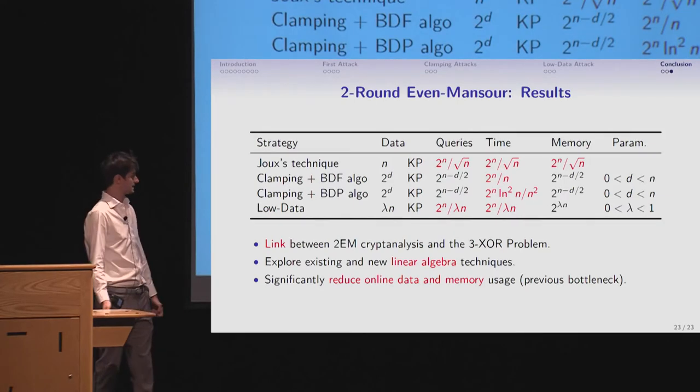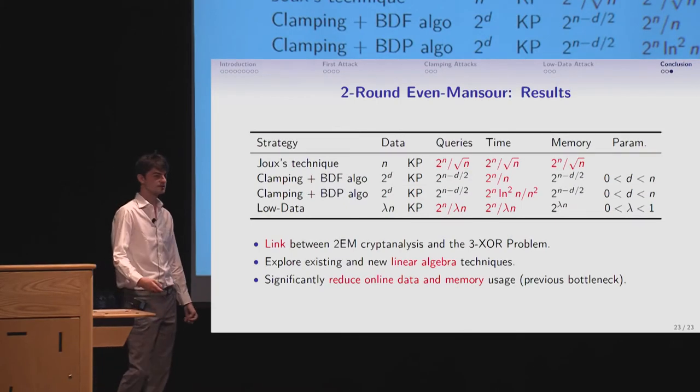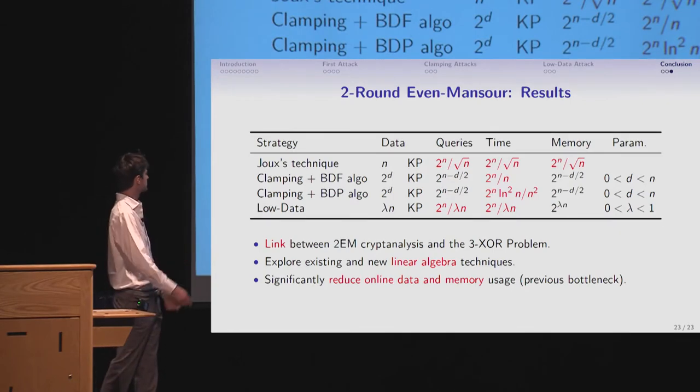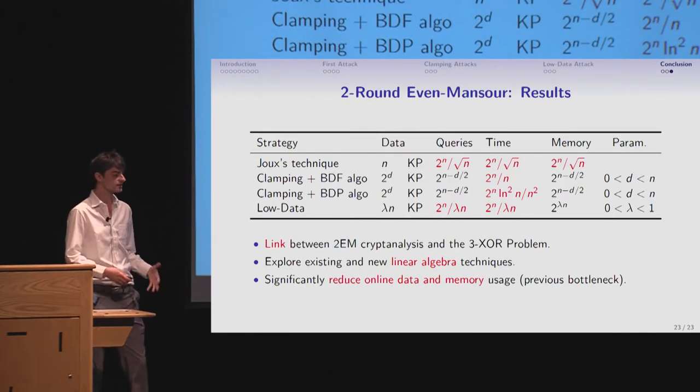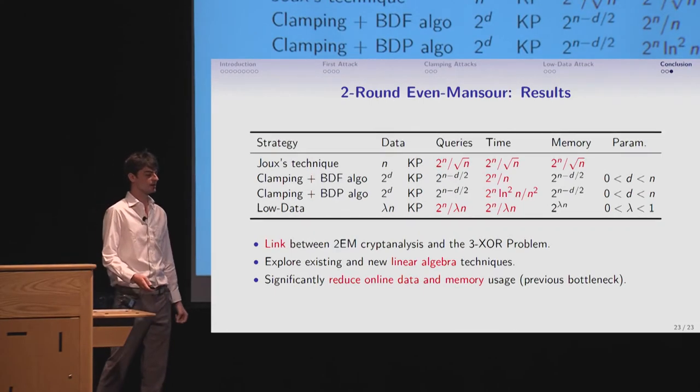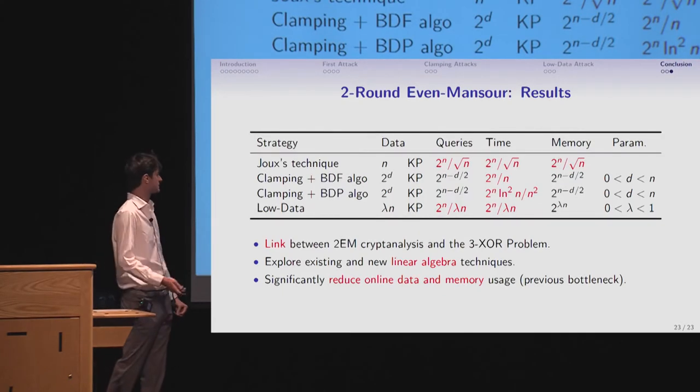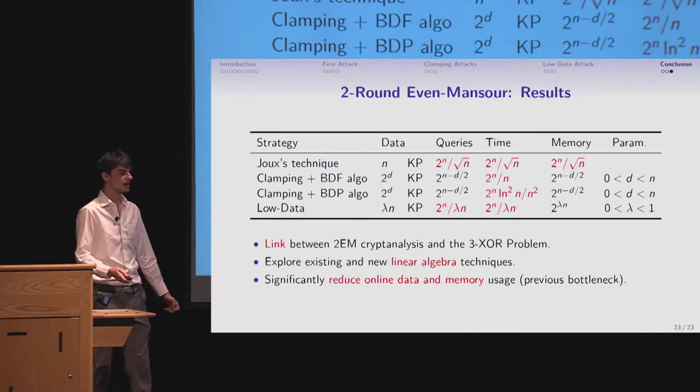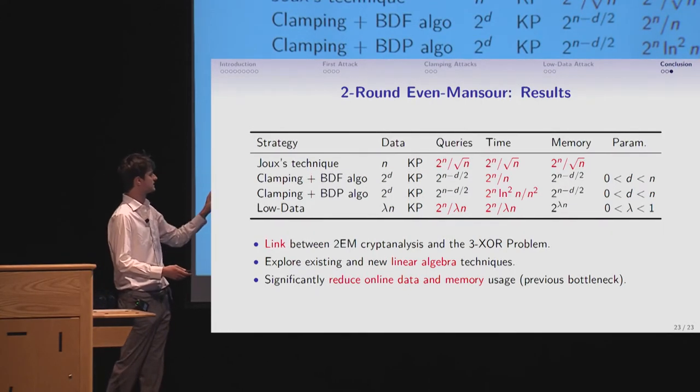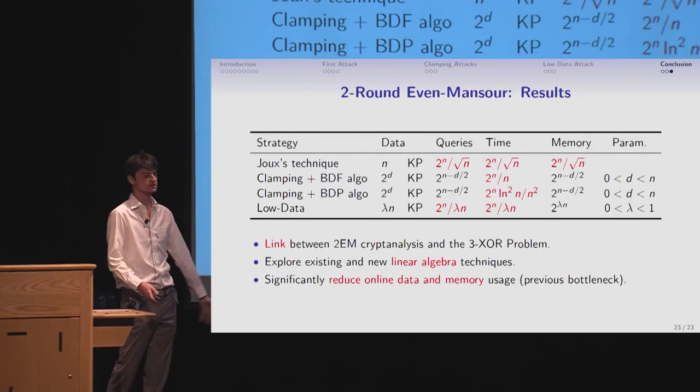So, this is my last slide. So, we get a new cryptanalysis with new trade-offs, with good management of data and memory. I've showed you, to get to this, and I showed you the link between the two round Even-Mansour and the 3-XOR problem. Could explore new linear algebra techniques. And that's really like, in our opinion, we could have better complexity profile on the bottleneck of previous attacks that were either the data or the memory usage. Thank you.